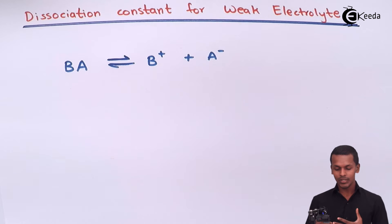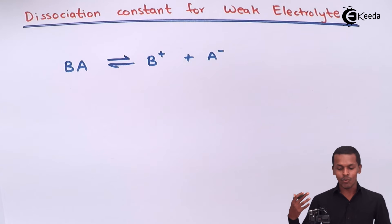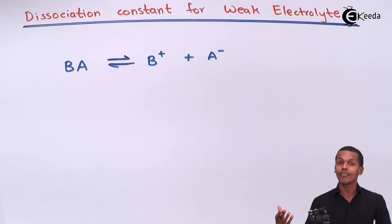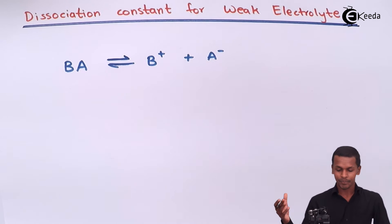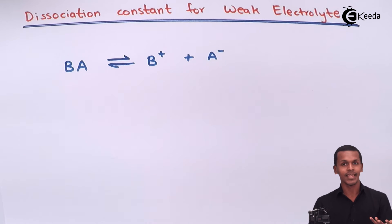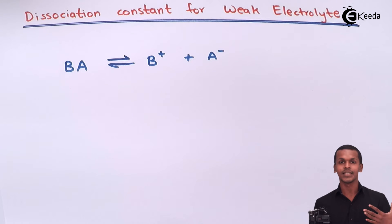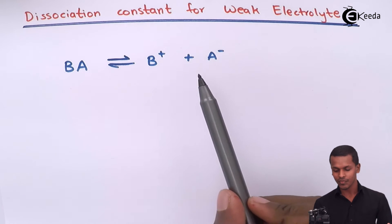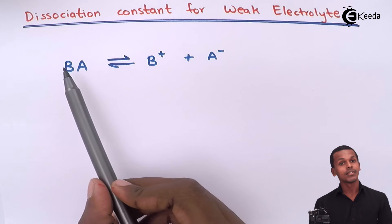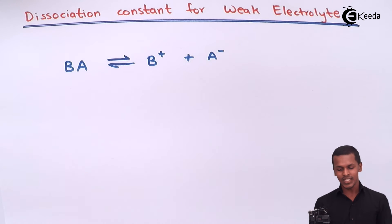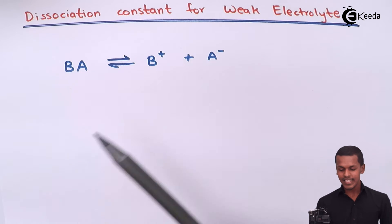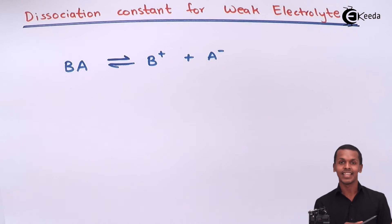To express the dissociation constant for the weak electrolyte, we first need to know the law of mass action. In the law of mass action, the equilibrium constant is the ratio of the product of the active masses of the products to the product of the active masses of the reactants. In this case, B+ and A− act as products and BA acts as the reactant.